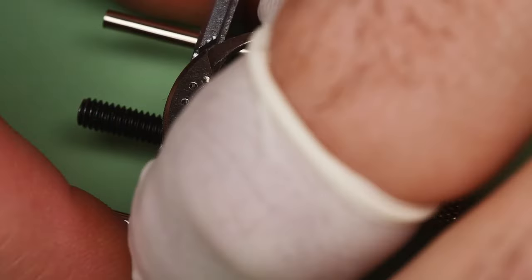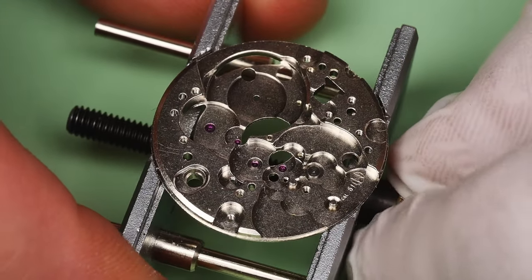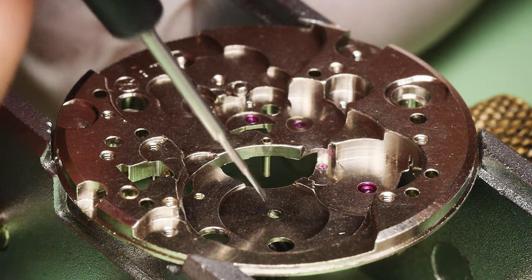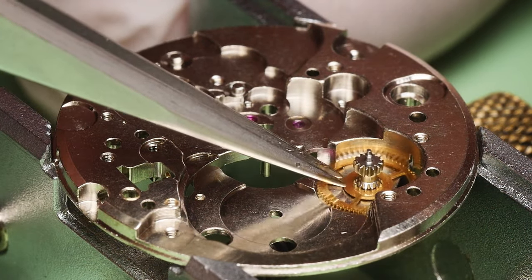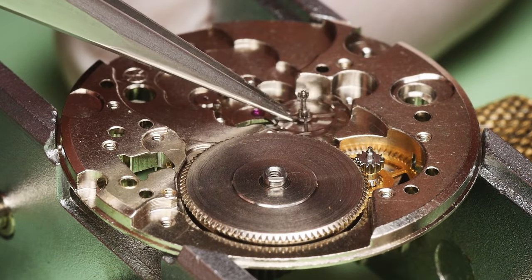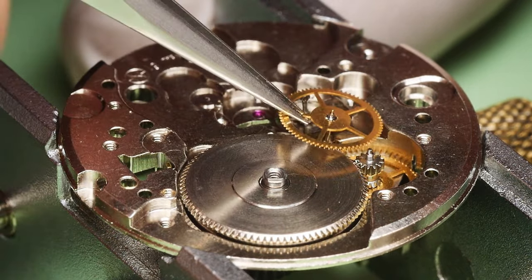Alright, for real this time, fun reassembly is at hand now. I'll lubricate the barrel hole now, lest I forget later. The first component of the train of wheels is the intermediate wheel, then the barrel, the escape wheel, and then the third wheel.